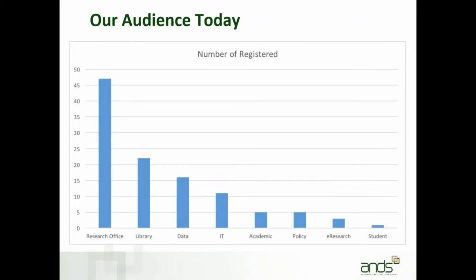We asked registered participants to provide their job titles and did a quick analysis of where they sit within their institutions. The majority are from the research office — particularly the integrity and reporting side — followed by a strong showing from the library. This variety of disciplines illustrates a point ANDS has been making: research data management is very much a shared responsibility within institutions.